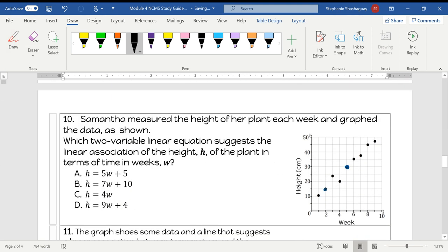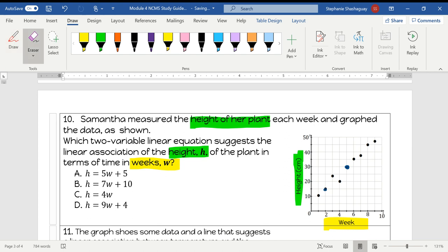Alright, question number 10. Here Samantha measured the height of her plant, which is going to be her Y values each week and graphed the data as shown. Which two-variable linear equation suggests the linear association of height H of the plant in terms of time in weeks W? So we need to write an equation for this line. The first thing we need to do is sketch a line of fit.